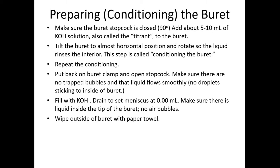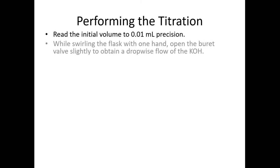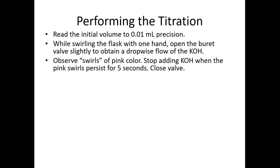We typically give the outside of the burette a little wipe down just to make sure we didn't accidentally spill some of the KOH on the outside, which would affect our readings. To perform the titration, we take the initial volume on the burette, and then while swirling the flask with one hand, we open the burette valve slightly to get a drop-wise flow of the KOH.